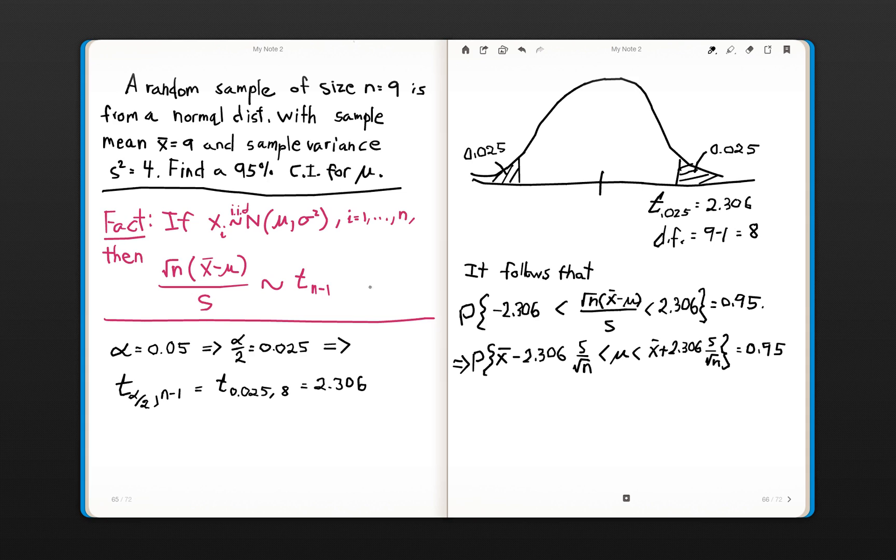Okay, so when you actually go out, take your random sample from the normal distribution, the probability that once you generate this confidence interval, that it will actually capture mu is equal to 0.95. So, this implies that x bar plus or minus 2.306 s divided by the square root of n is a 95% confidence interval for mu.